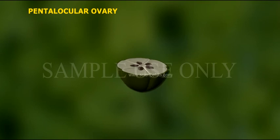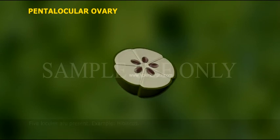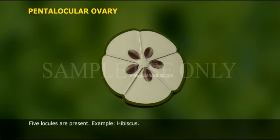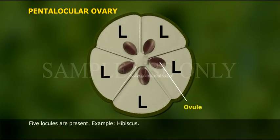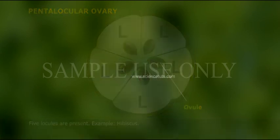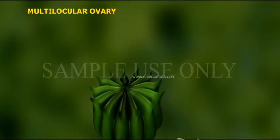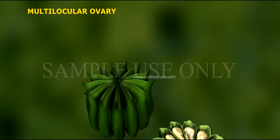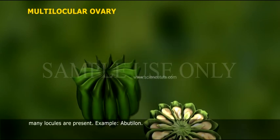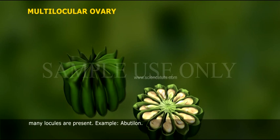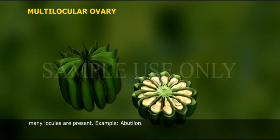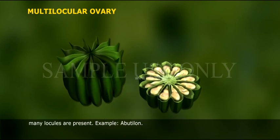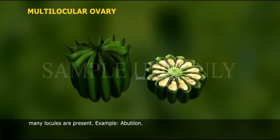Pentalocular ovary: five locules are present. Example: Hibiscus. Multilocular ovary: many locules are present. Example: Abutilon.